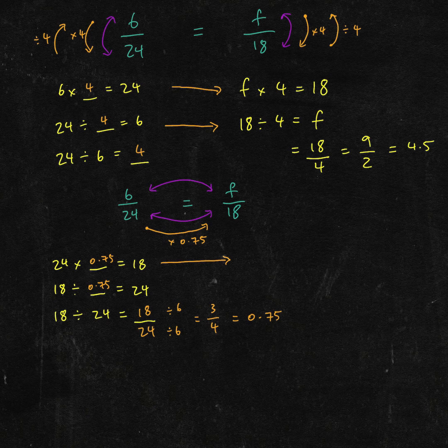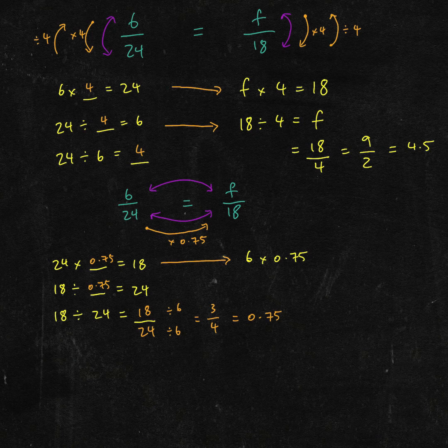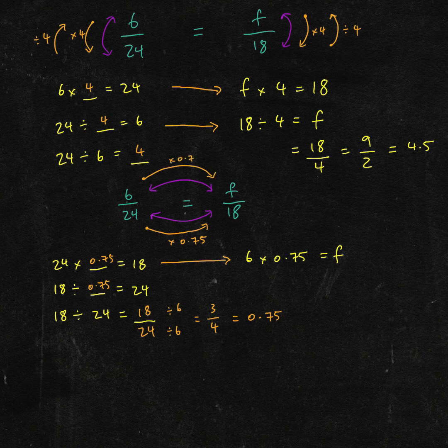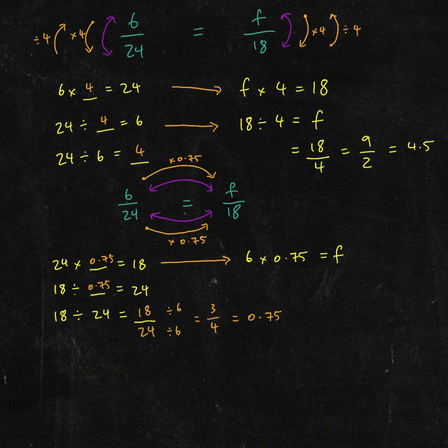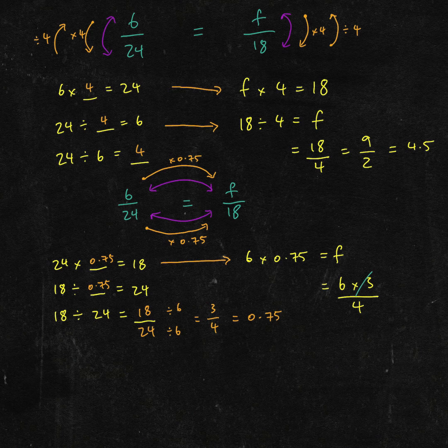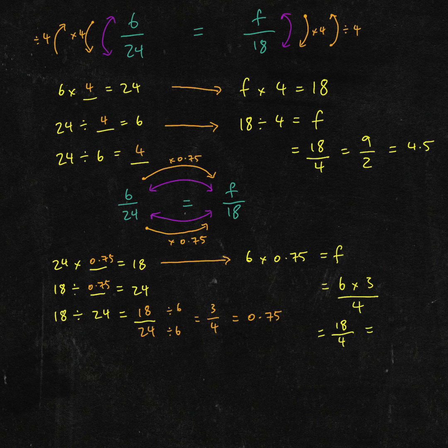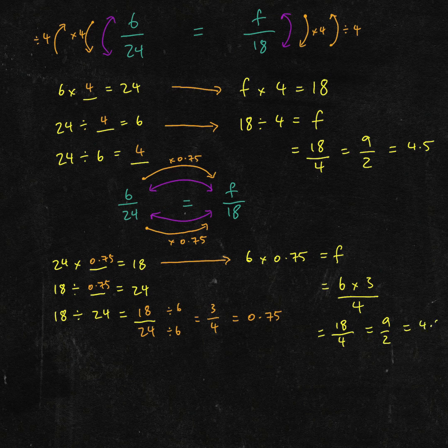If 24 times 0.75 is 18, then 6 times 0.75 will equal F. Again, if 6 times 0.75 should equal F, which is the same as saying 6 times 3 over 4. Remember, 3 over 4 is the same as 0.75. So that can be simplified to 18 over 4, which is equal to 9 over 2, which is equal to 4.5.